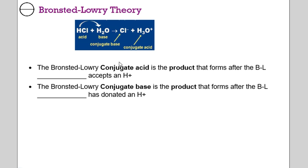The Bronsted-Lowry conjugate acid is the product that forms after the Bronsted-Lowry base accepts the hydrogen. So our water is the base, accepts the hydrogen, so it's our conjugate acid. The conjugate base is the product that forms after the Bronsted-Lowry acid has donated a hydrogen. Our acid donates hydrogen, becoming the conjugate base.